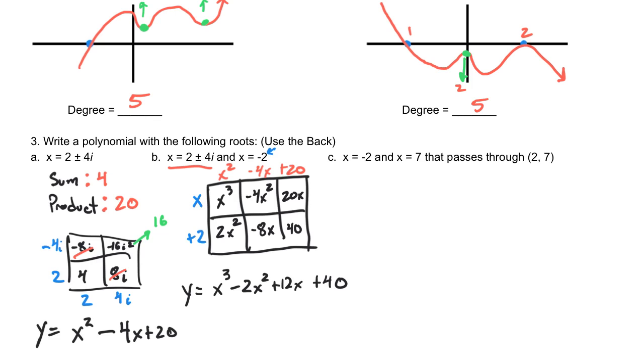For part c, now moving on, added piece of information is that it passes through this point to 7. And so, we know our roots, and so right away we can say our equation is going to be y equals x squared. The sum of these two things is a positive 5, and the product is a negative 14.